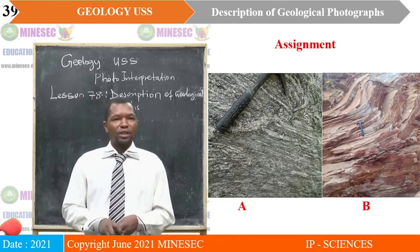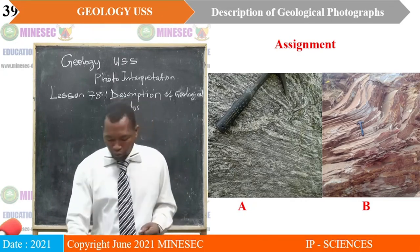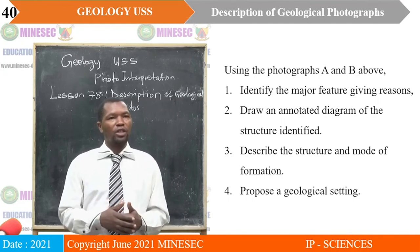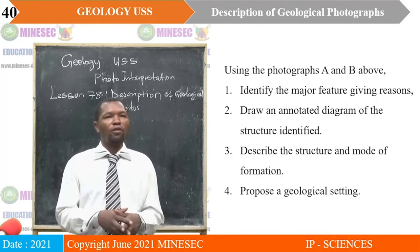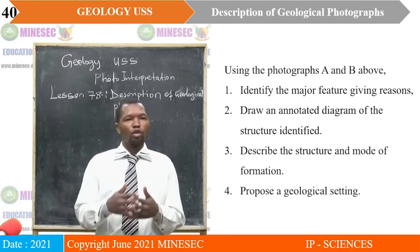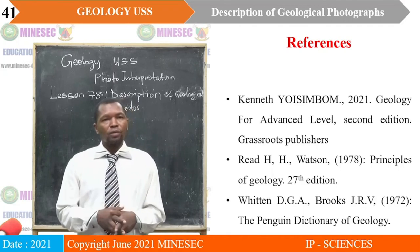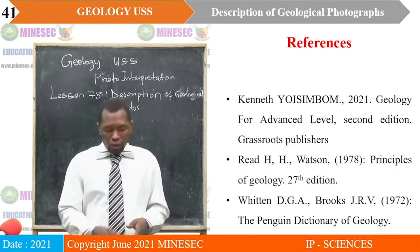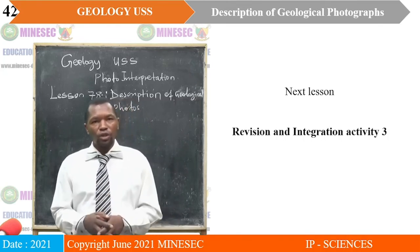Now we look at our assignment. Using photographs A and B from before, you are going to: first, identify the major features giving reasons; then draw annotated diagrams of the structures identified; then describe the structure and the mode of formation; then propose a geological setting. You can use your geology textbook for advanced level guidance on how to identify and describe features on a photo. We have come to the end of our lesson. Our next lesson will be on Revision and Integration Activity 3. See you in our next lesson.